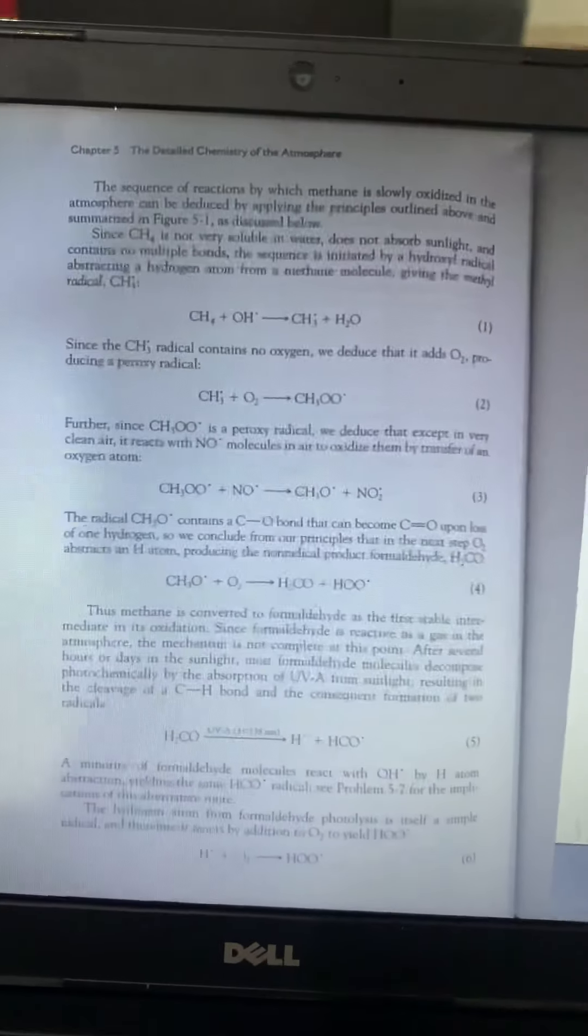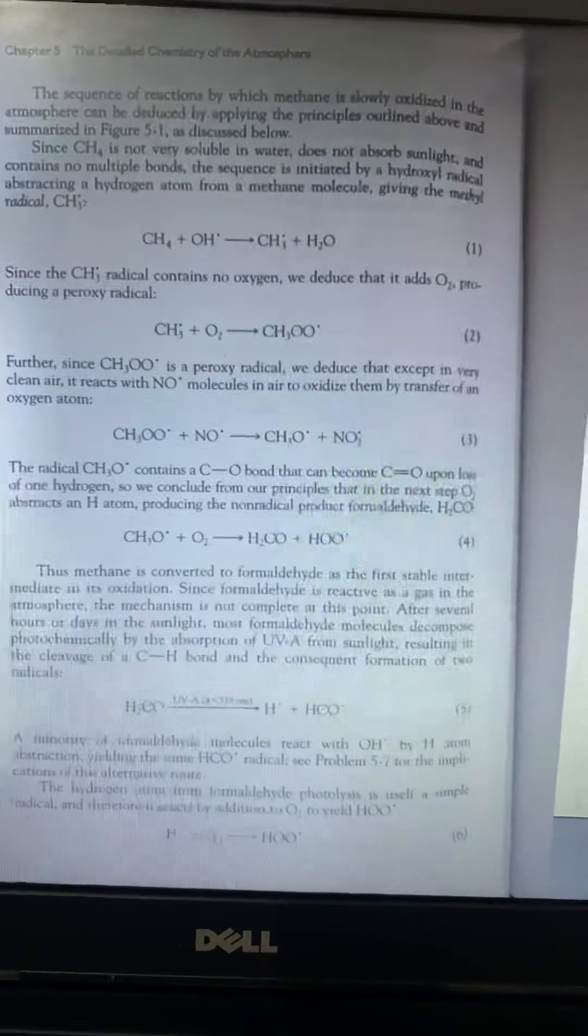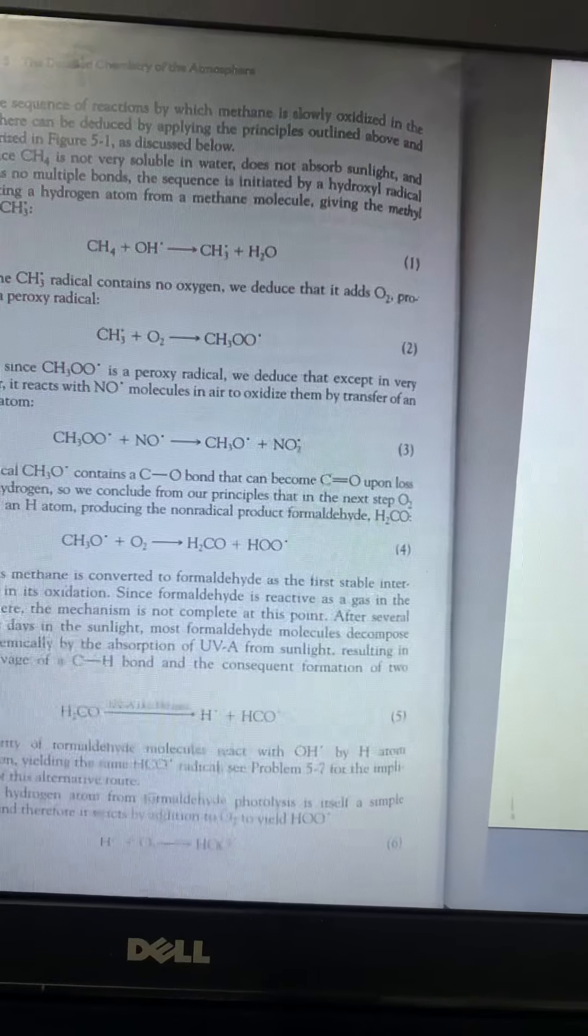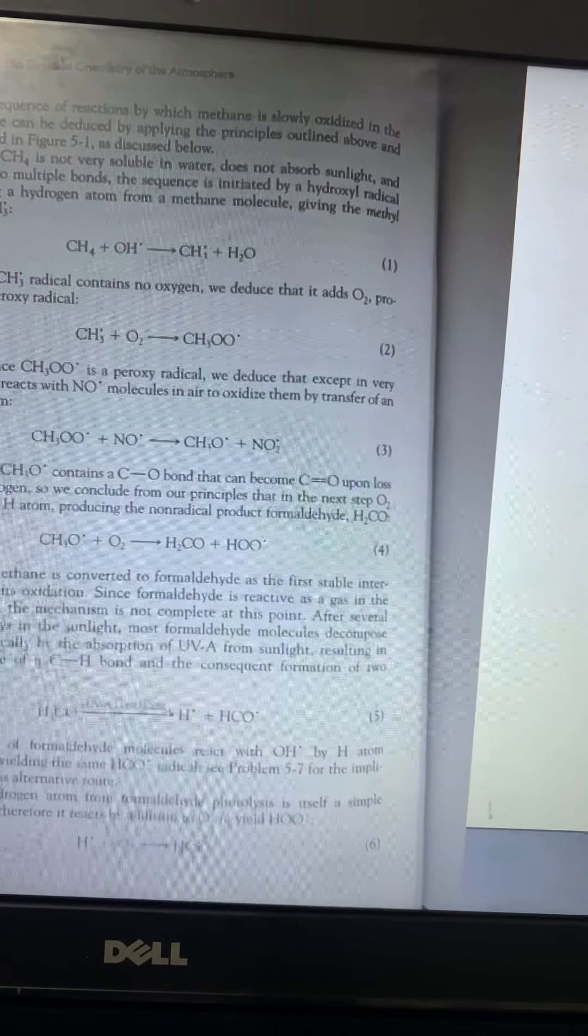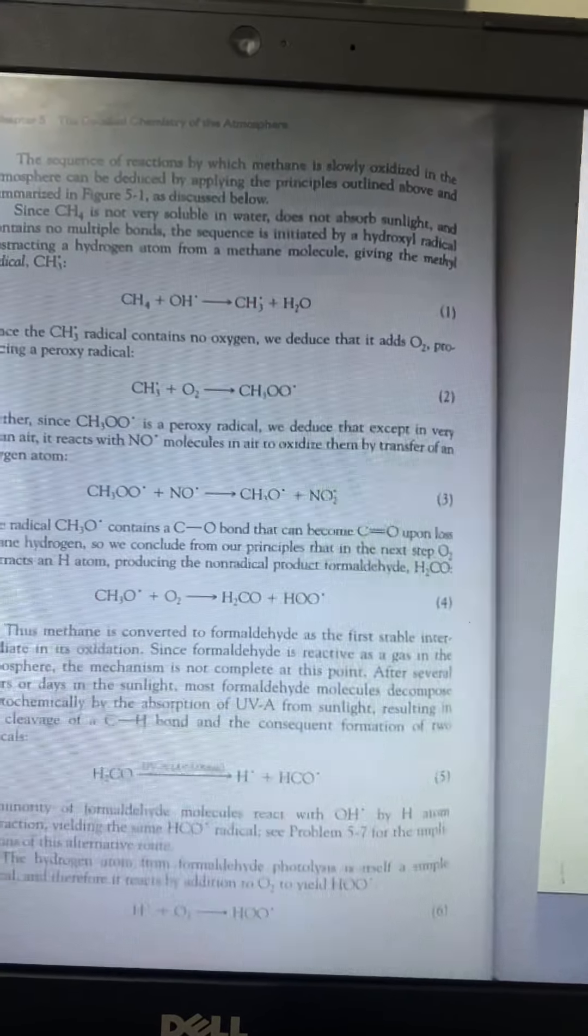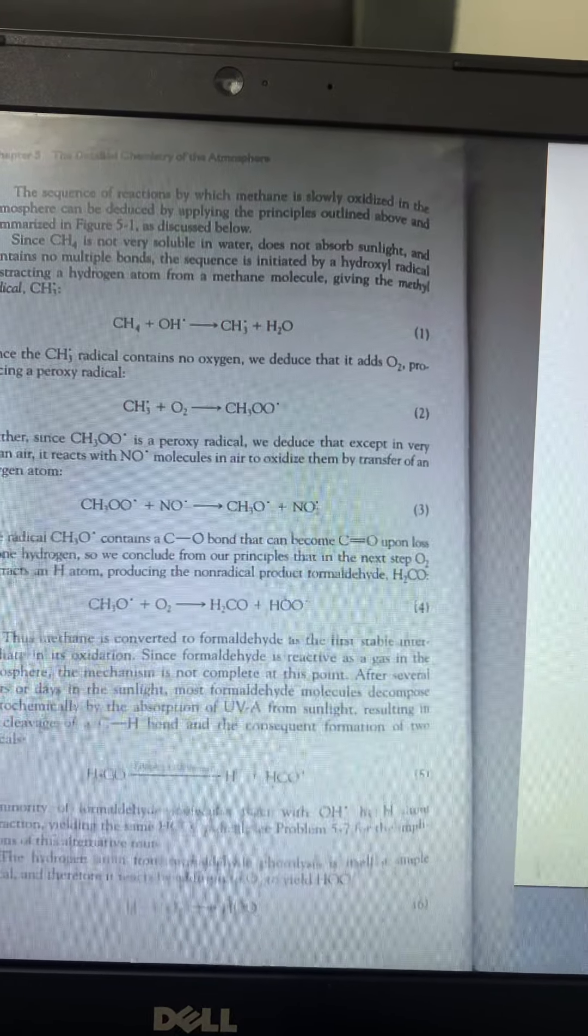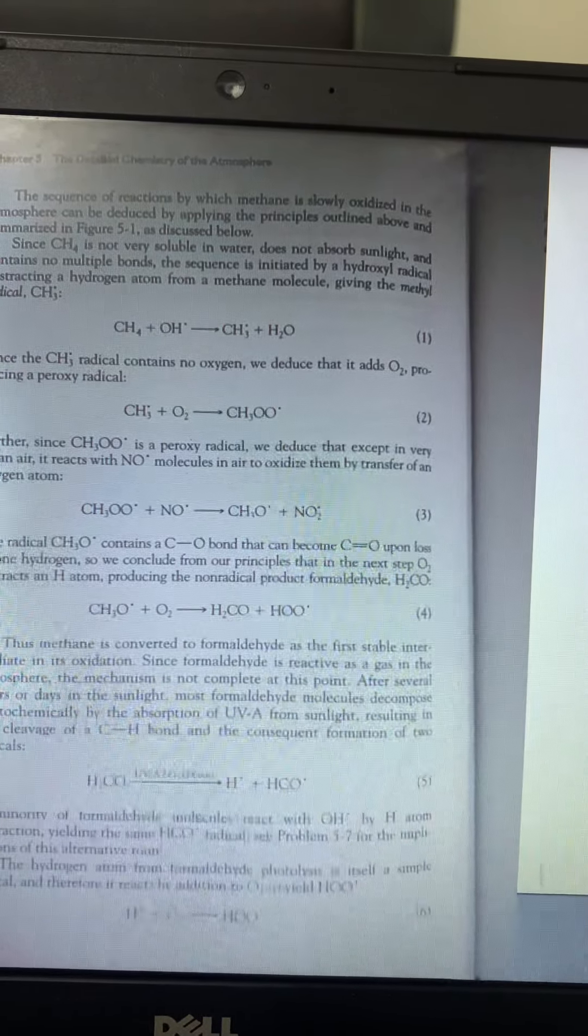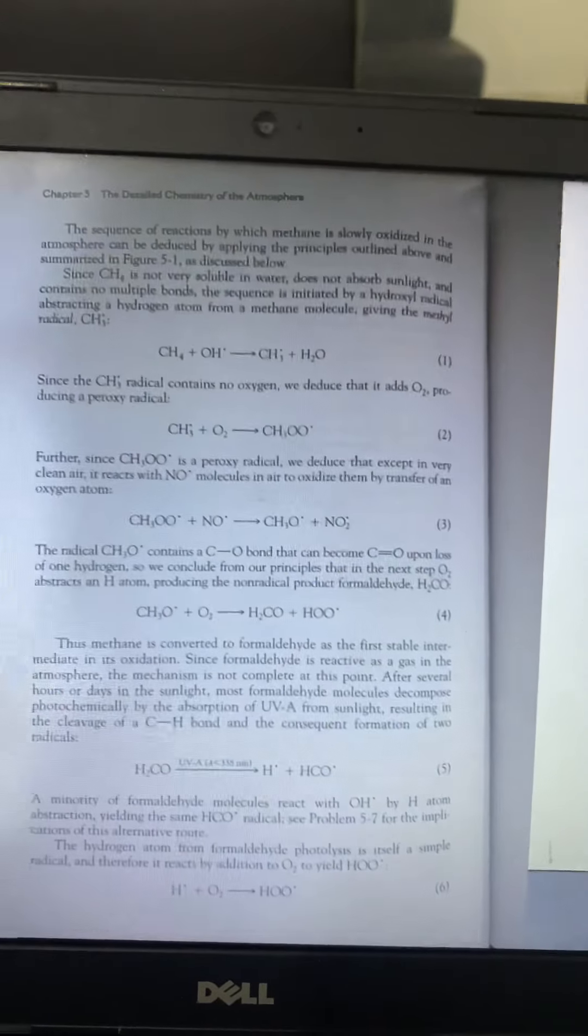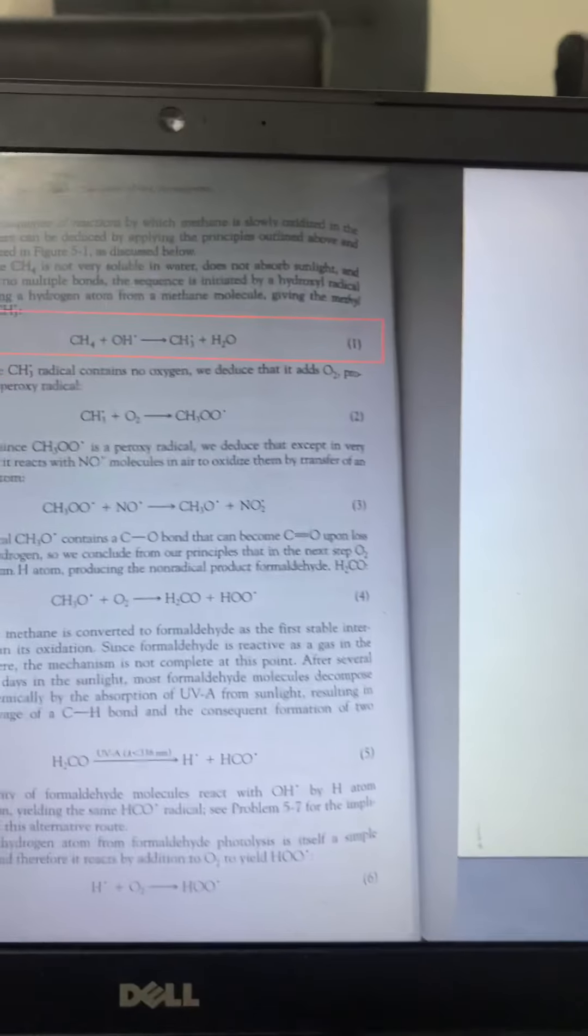Here you can see the detailed chemistry of the atmosphere topic. Chemistry of methane, atmospheric methane. The sequence of reactions by which methane is slowly oxidized in the atmosphere can be reduced by applying the principal outline below and summarized in figure mentioned, that is figure 5.1 here. We will see in the next section or next page.